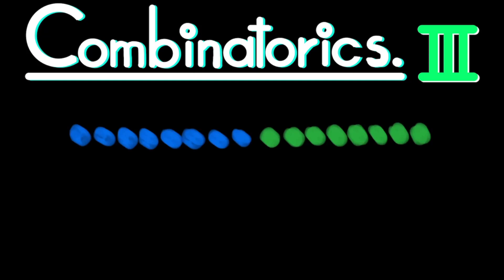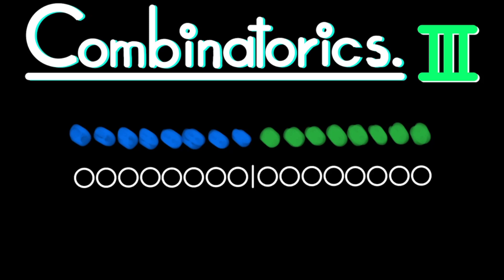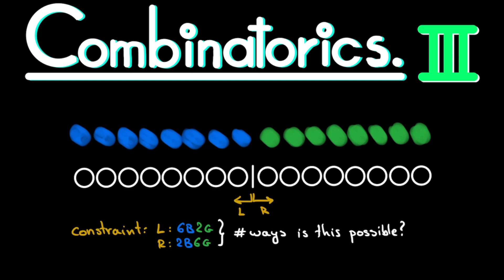Let's say you are given 8 blue atoms and 8 green atoms, and 16 places or spots on which you can arrange these atoms. These 16 spots are divided into 2 groups of 8 places — the left hand side and the right hand side. Given a constraint, for instance that on the left hand side you need to have 6 blue atoms and 2 green atoms, and consequently on the right hand side 2 blue atoms and 6 green atoms, in how many possible ways can you arrange the atoms such that this constraint is fulfilled?